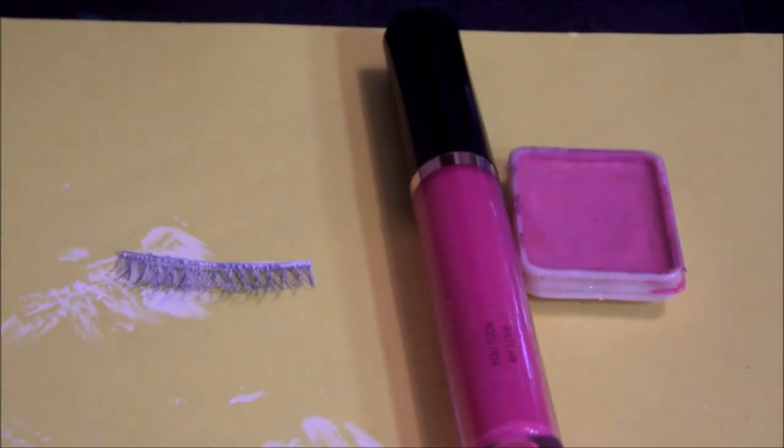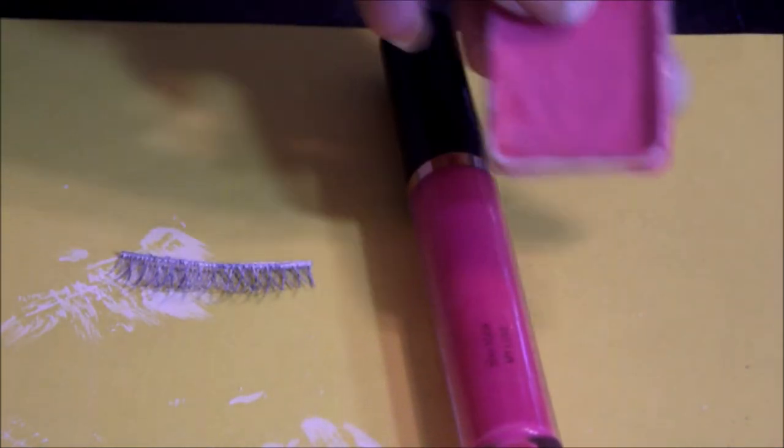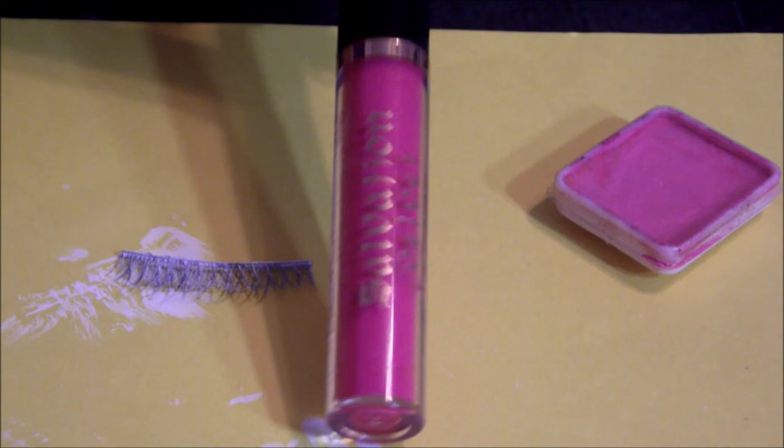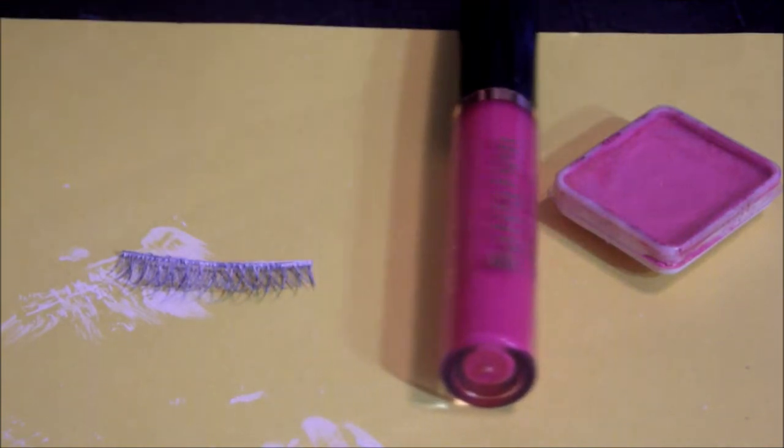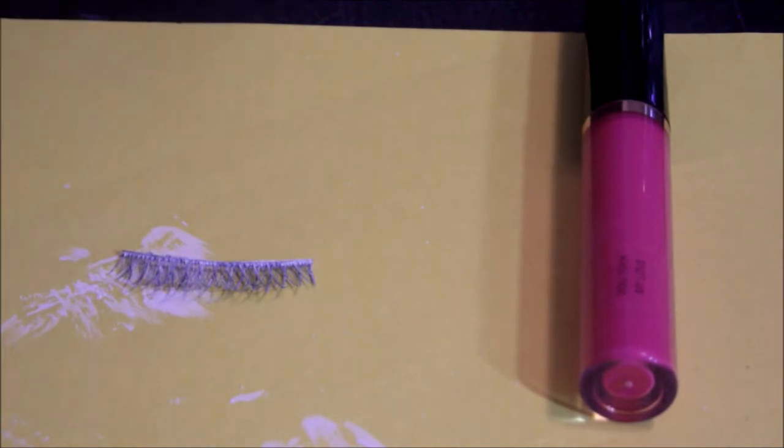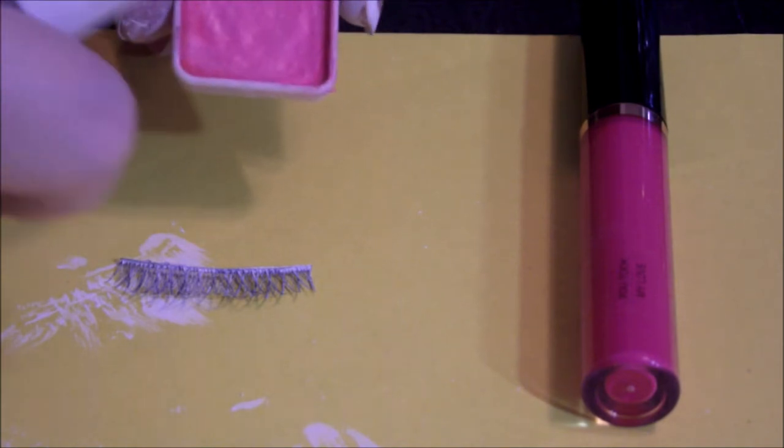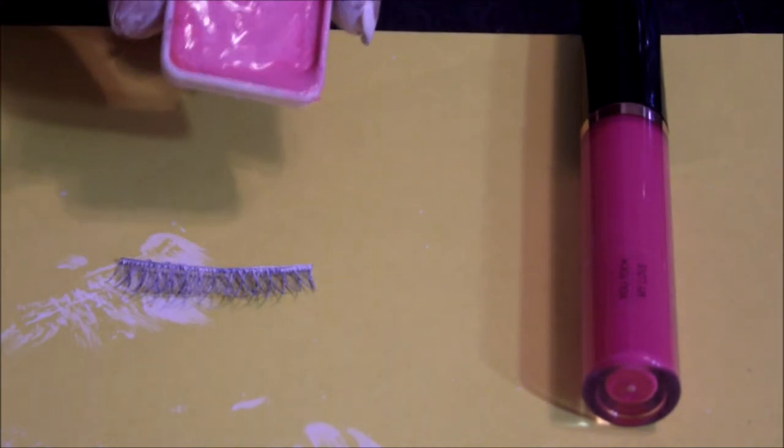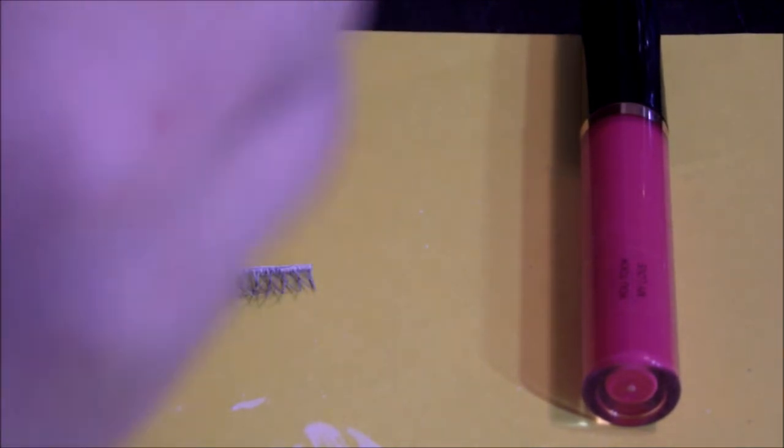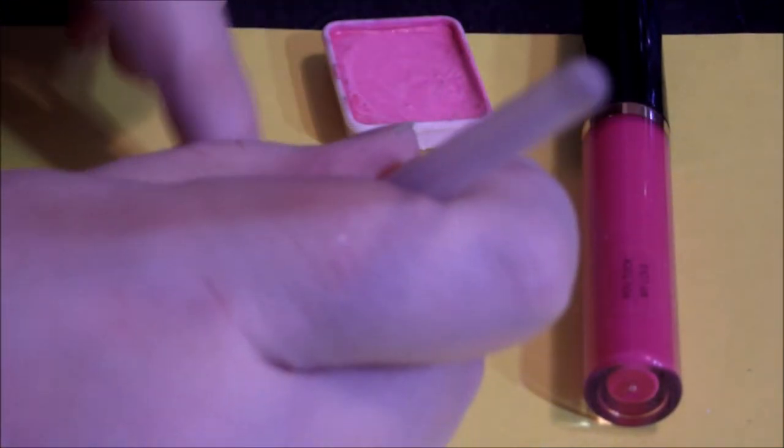So now I'm going to apply half of the face paint to one side and half of the liquid lipstick to the other side just to show you guys that either one works. So I'm going to take the face paint, and these are water-activated. You just spread some water, take a brush, and just kind of swirl it around. You can do these literally any color you want.